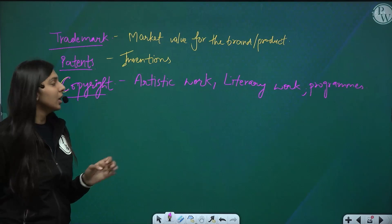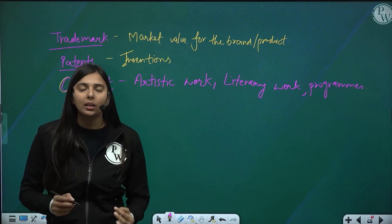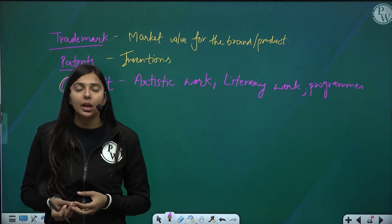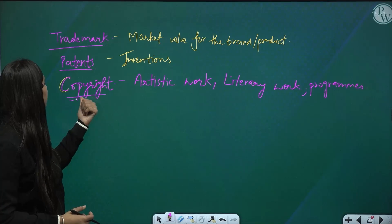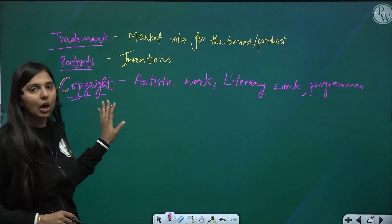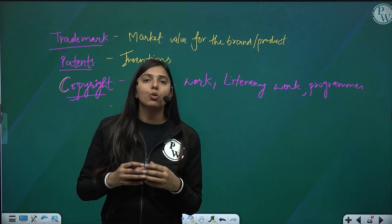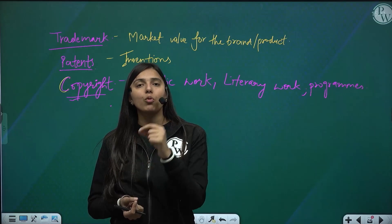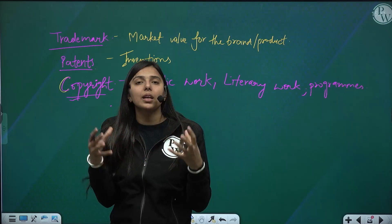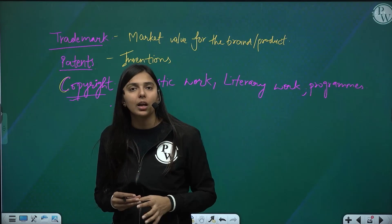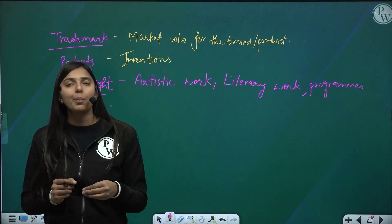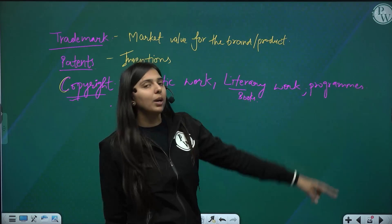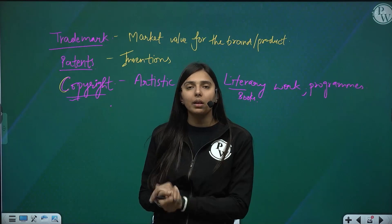After patents, the next intellectual property right is copyright. Copyright protects your artistic works and literary works. You have created a painting — you can copyright it. You have written a book or composed a song — you can protect it and get exclusive rights by way of copyright. The benefit of copyright: if you have produced a movie or composed a song and copyrighted it, you will have exclusive rights over where to sell it, at what price, and in which countries. Literary works include books; programs can include coding or decoding.